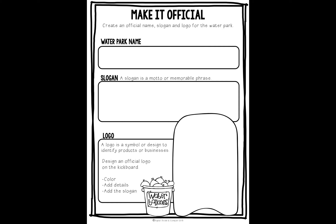Then you're going to fill out this part — make it official. You're going to come up with a water park name, your own. You cannot use something that's already a water park. You're going to come up with a slogan, which is a motto or memorable phrase. For instance, if you think of Burger King, it says 'have it your way' — that's their slogan, so anytime you hear it you think of Burger King. So what is a good slogan that's going to have people think of your water park when they hear it?